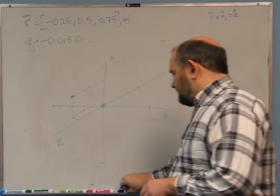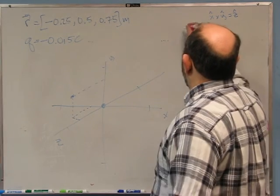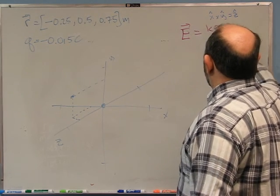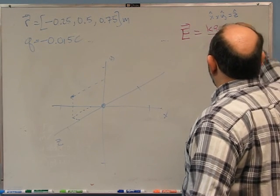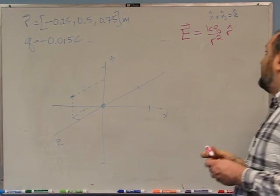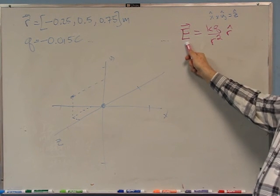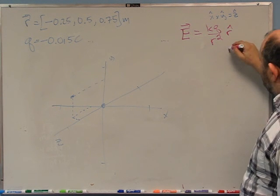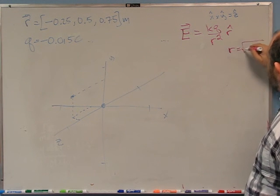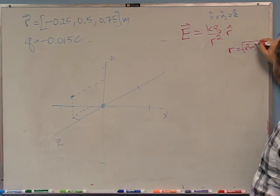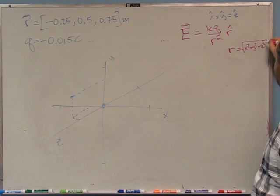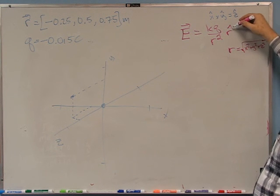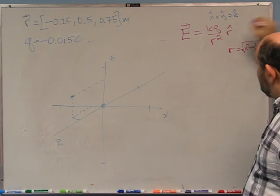How do you calculate the electric field? We have E⃗ = kQ/R² R̂. This is the electric field at position R⃗, where R is the distance from the origin — the square root of X² + Y² + Z² — and R̂ is the unit vector pointing away from the origin in the direction of R⃗.